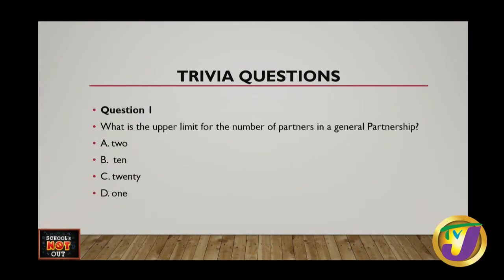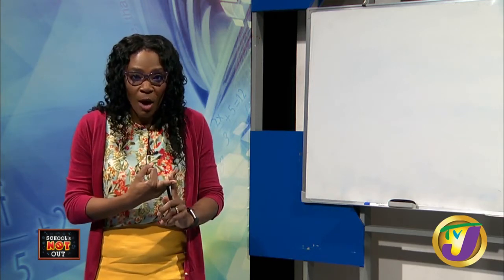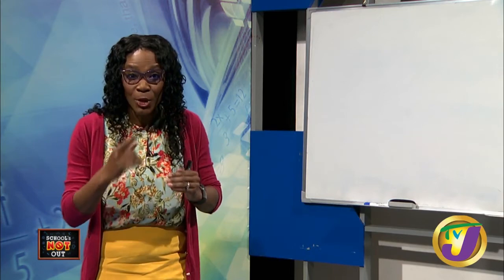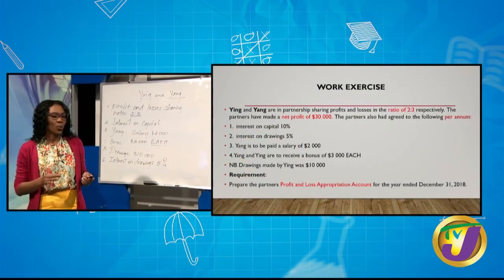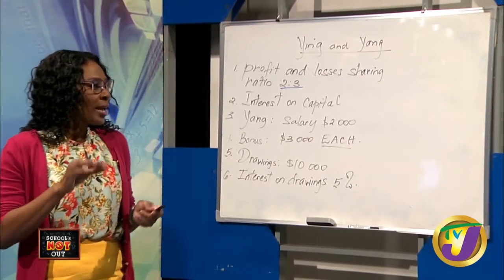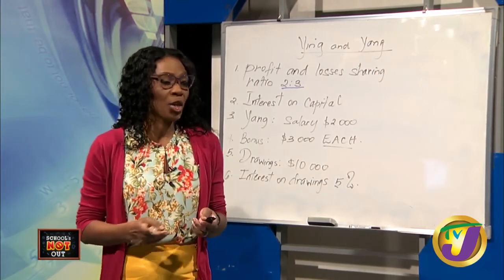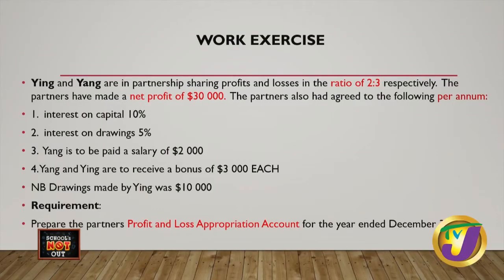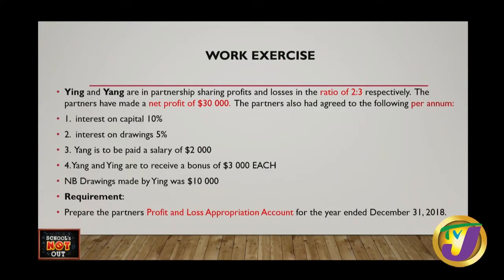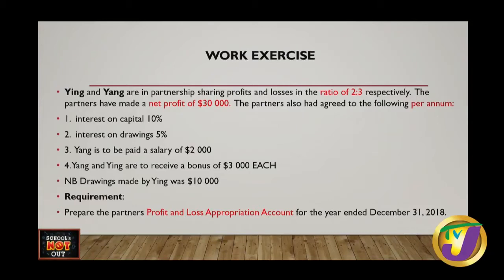Now we have a work exercise. Grab your pen, paper, and calculators — school's not out, and I need you to work with me actively. On the board we have an exercise that we're going to glide through to cement certain principles. The exercise is based on two partners, Yin and Yang, who are in partnership sharing profits and losses in the ratio of two to three respectively. The partners have made a net profit of thirty thousand dollars.